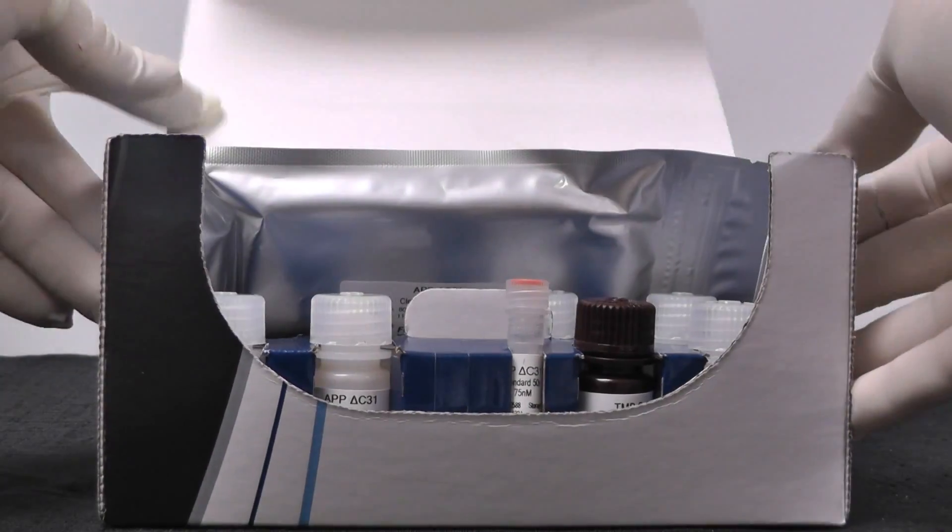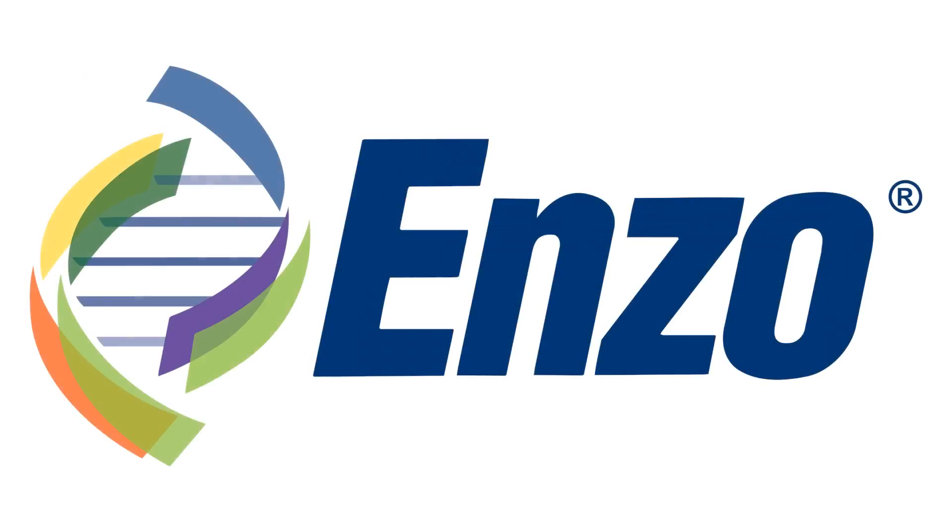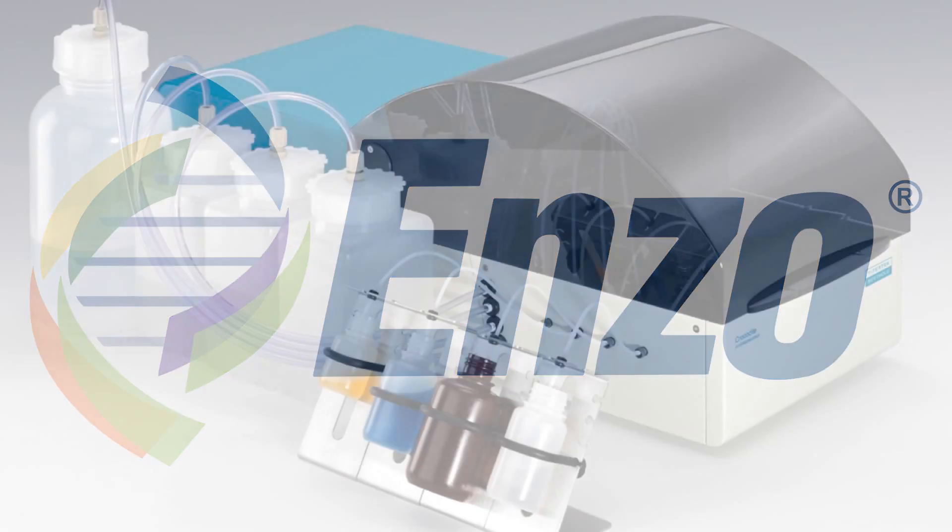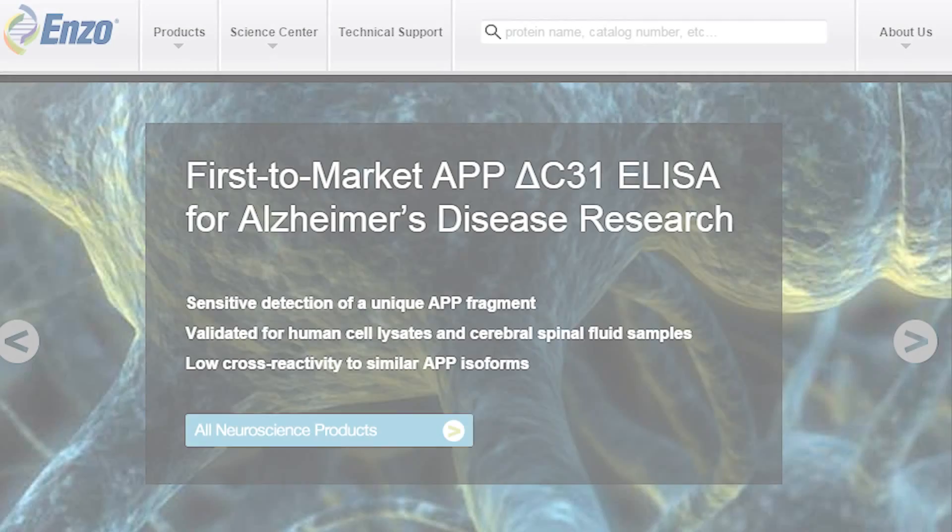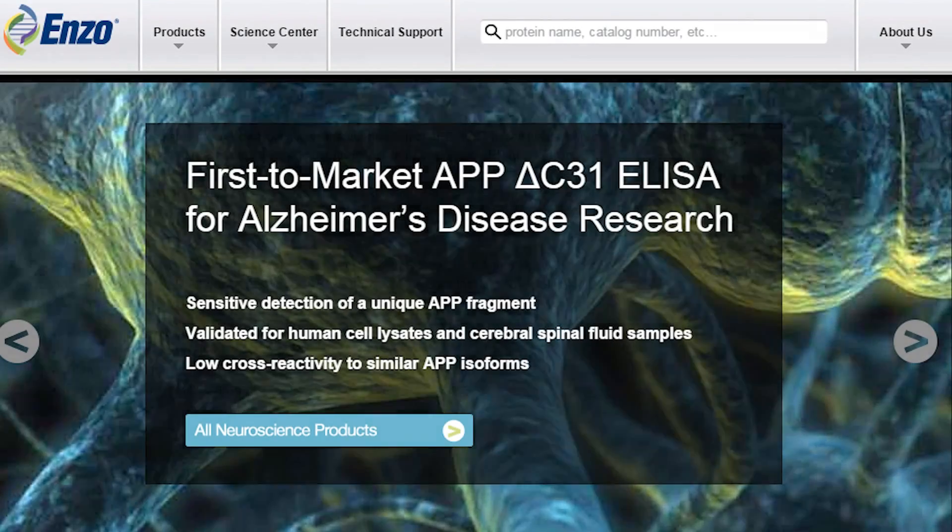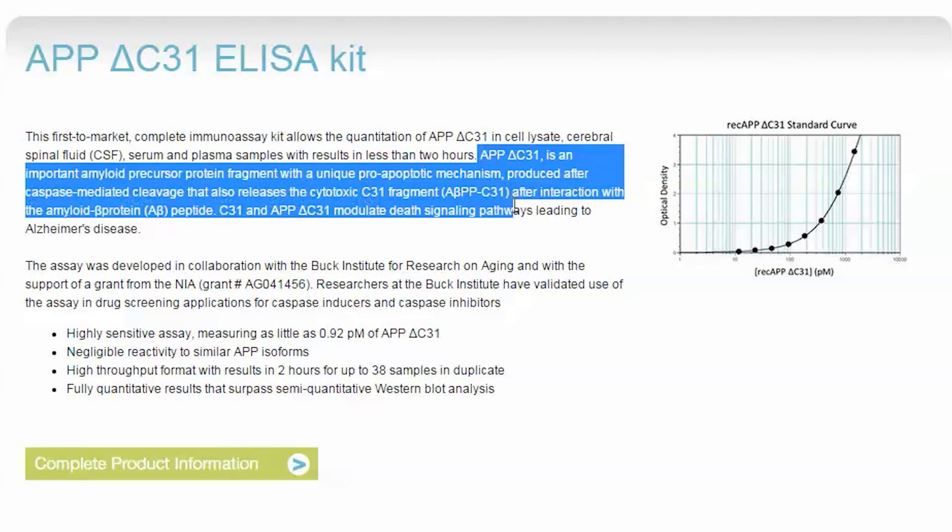Here we show the setup of APP Delta C31 ELISA from Enzo Life Sciences with Crocodile Mini Workstation. APP, amyloid precursor protein, plays an important role in the pathogenesis of Alzheimer's disease.